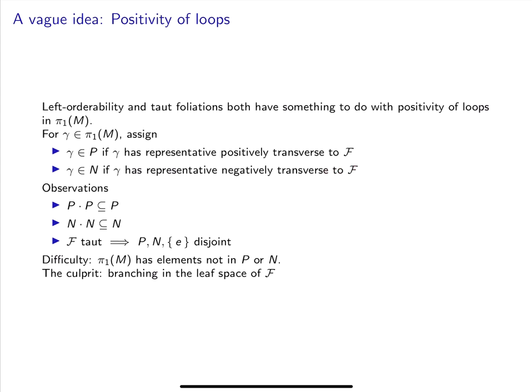You can concatenate two loops positively transverse to the foliation, so P × P is a subset of P. And similarly, N × N is a subset of N, so we're good so far. Now it turns out that if F is taut, that implies that P, N, and the singleton containing the identity are disjoint. Remember that tautness of F implies that loops transverse to the foliation are not contractible, so that implies that P is disjoint from the singleton containing the identity, and N is also disjoint from the singleton containing the identity. P is also disjoint from N for similar reasons.